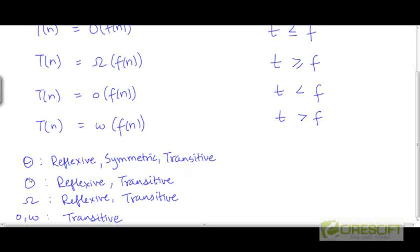Likewise, we showed that the big-O relation and the big-Ω relation are reflexive and transitive, but they are not symmetric. By saying they are not symmetric, I mean that if t is O(f), then f is not necessarily O(t). Similarly, if t is Ω(f), then f is not necessarily Ω(t). In fact, the relationship is reversed: if t is O(f), then f is Ω(t), and vice versa.